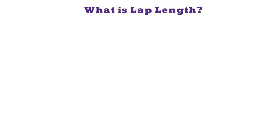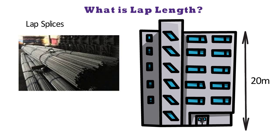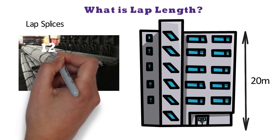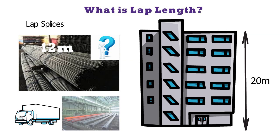Lap length, also known as lap splices. Suppose we need to construct a building of 20 meter height, but there is no 20 meter single bar available in the market. The maximum length of steel bar available in the market is usually 12 meter — because of transportation problems and manufacturing difficulties. So we need to join 2 bars of 12 meter to get a 20 meter bar.